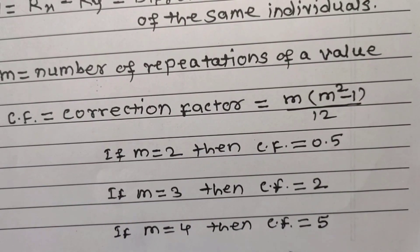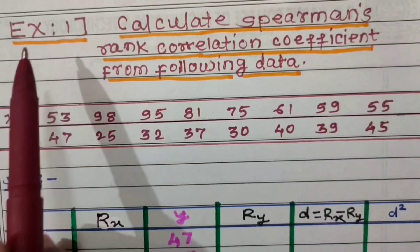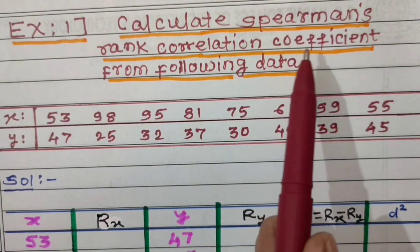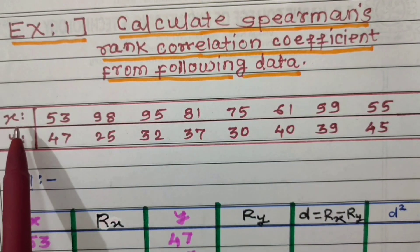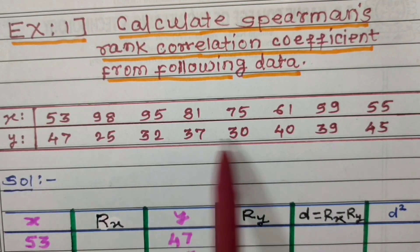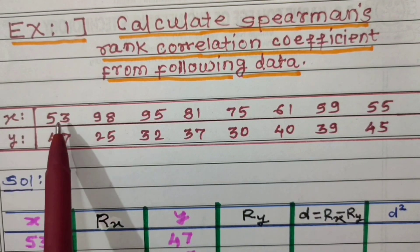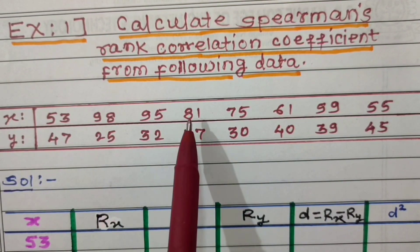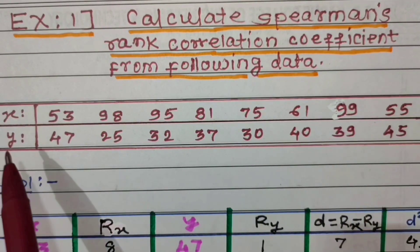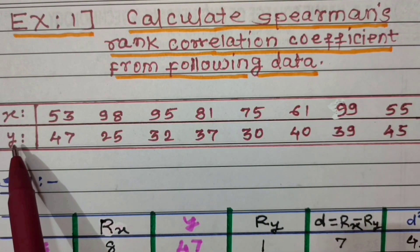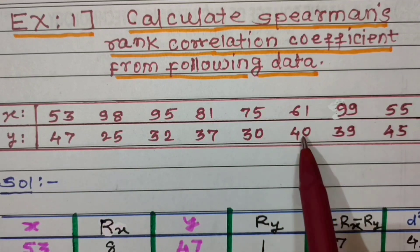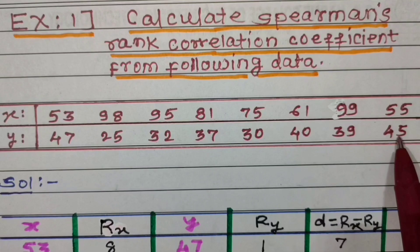Let us solve problems on Spearman's rank correlation coefficient. Example number 1: Calculate Spearman's rank correlation coefficient from the following data. Values of x are 53, 98, 95, 81, 75, 61, 99, 55 and values of y are 47, 25, 32, 37, 30, 40, 39 and 45.